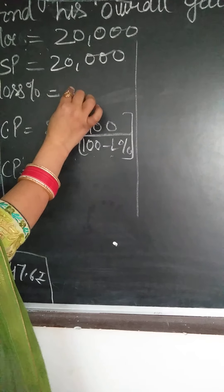Now for the second buffalo, the cost price calculation: selling price is 20,000, loss is 10%. So CP equals 20,000 multiply 100 upon 100 minus 10, which is 90. After dividing, the answer is 22,222.2 rupees. So the second buffalo's cost price is also found.